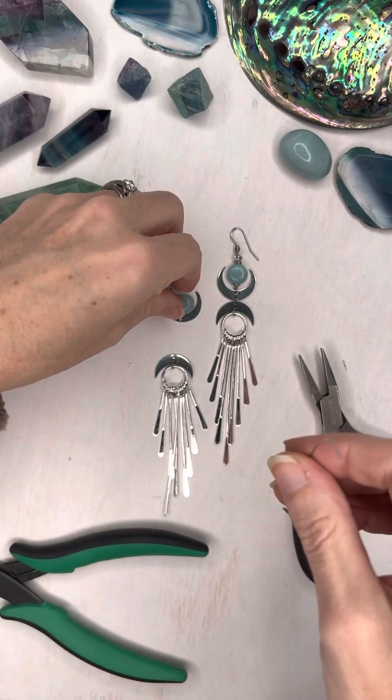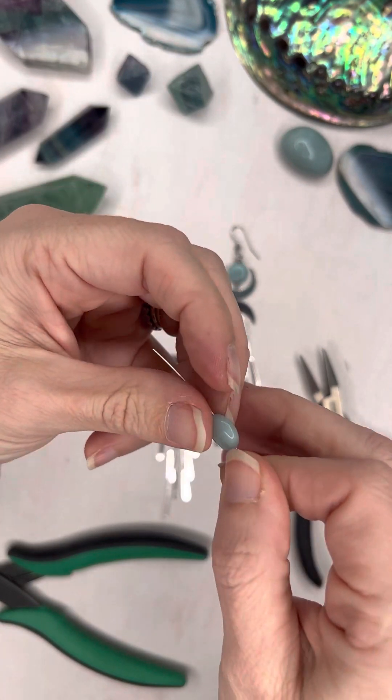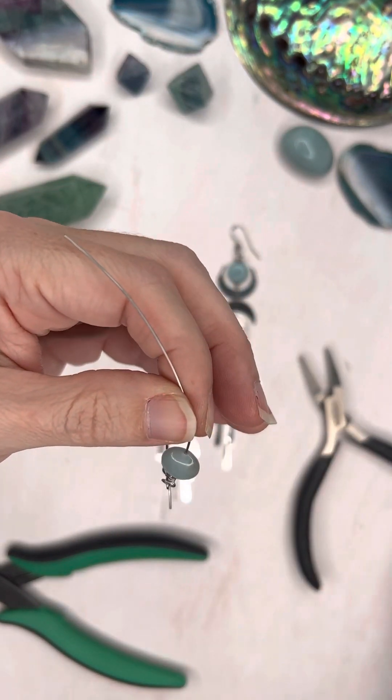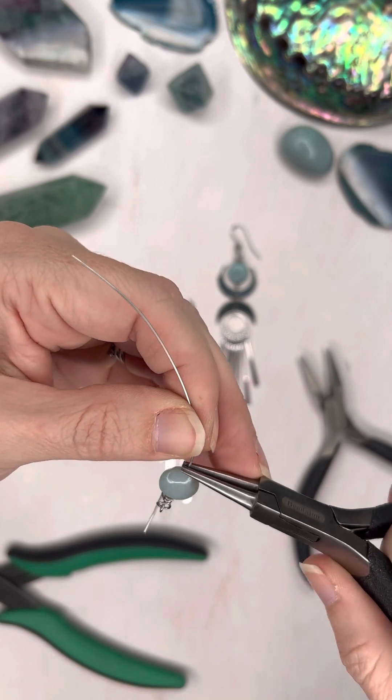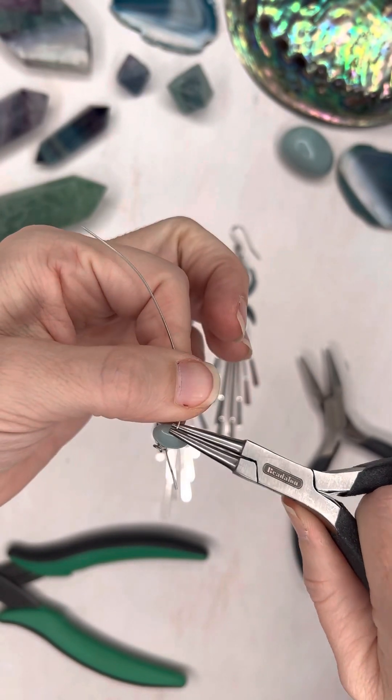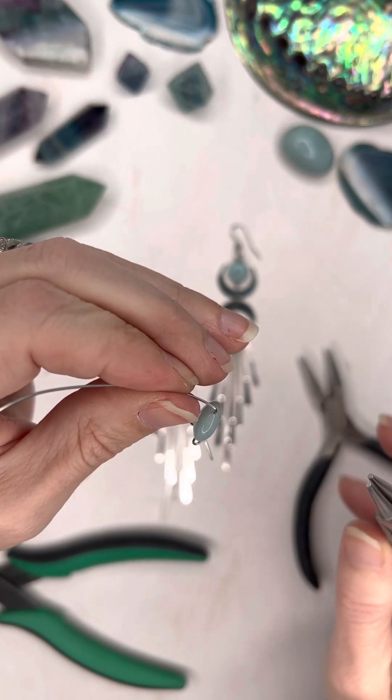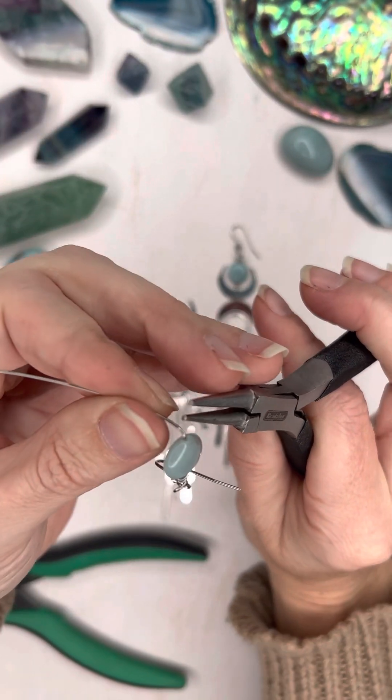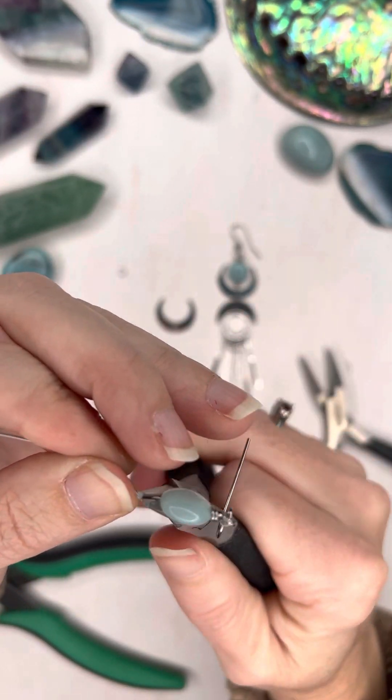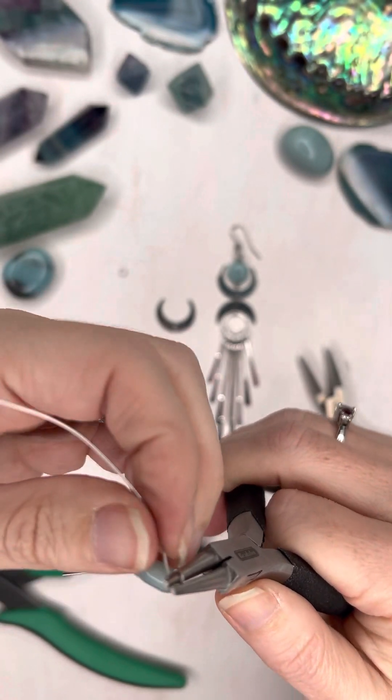I'm going to string on the Amazonite coin. And then I'm going to put my needle nose pliers right up against that coin. I'm going to bend it away so it's got a 90 degree angle. And I'm going to take my pliers at the top, put the wire around.